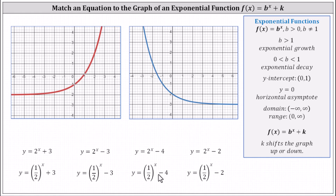Looking at the graphs for a moment, notice the red graph increases from left to right, which means we have exponential growth. Also notice the horizontal asymptote is not y equals zero — it's y equals negative two. The blue graph on the right is decreasing, and therefore we have exponential decay, and the horizontal asymptote is y equals negative three.